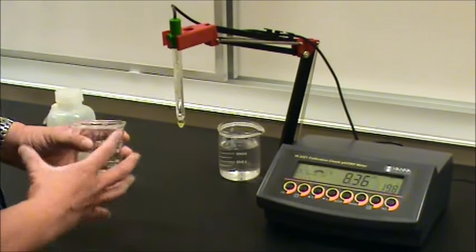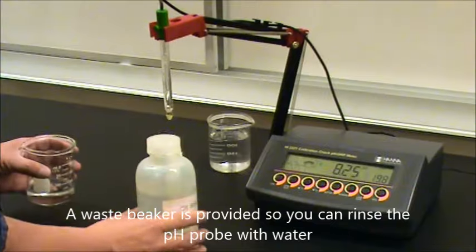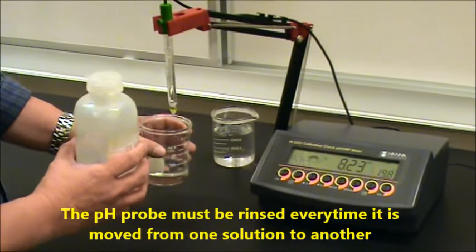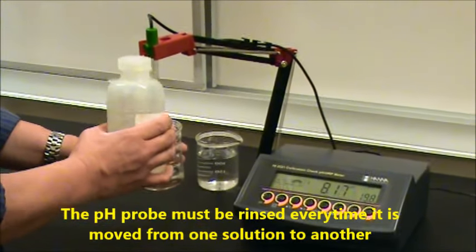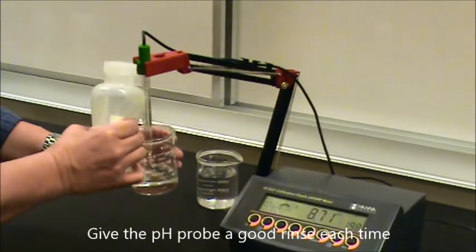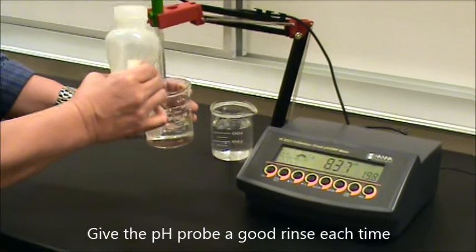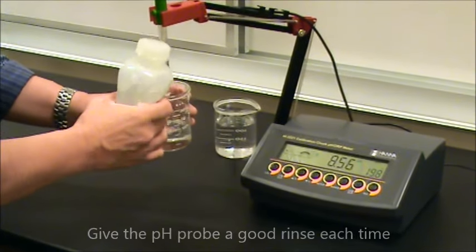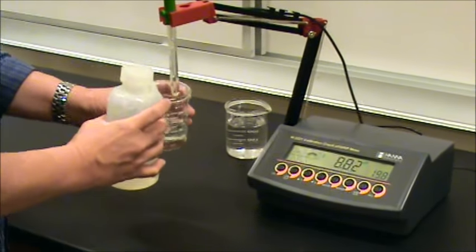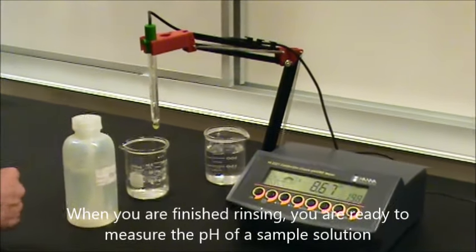You'll also have a larger waste beaker for holding the rinse solution. Before you put the tip into any other solution for measurement, you want to make sure that you rinse the tip of the probe off. Give it a good rinse. If you're not quite sure, overdoing it is better than underdoing it. Make sure the probe is nice and clean with a rinse before you use it for measurement.